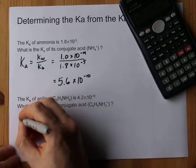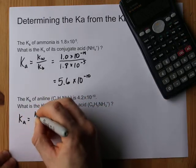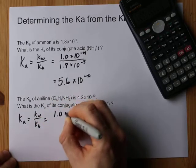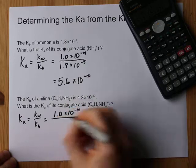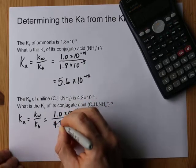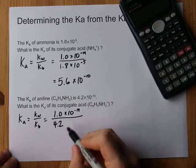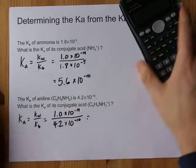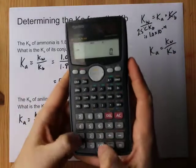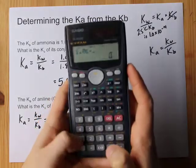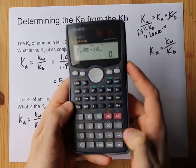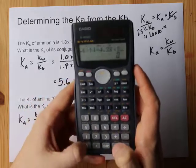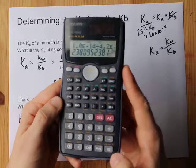Shall we do it one more time? Sure. Ka is Kw divided by Kb. That's 1.0 times 10 to the negative 14. Divide it by the number you're given. For aniline it is 4.2 times 10 to the negative 10. Let's see what that gives us. 1.0 times 10 to the negative 14 divided by 4.2 times 10 to the negative 10. Calculator does it.